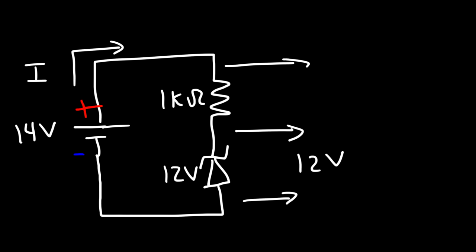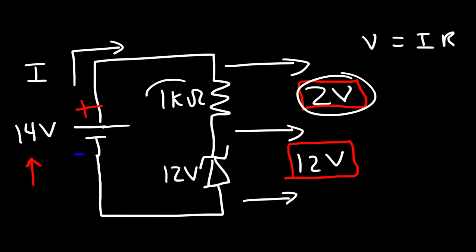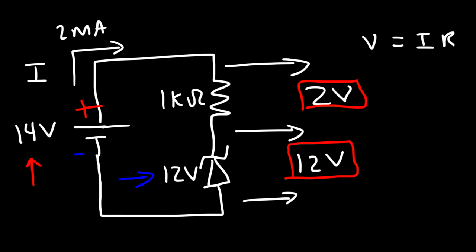That means the voltage across the resistor has to be 2 volts, because these two have to add up to the voltage of the battery. So we have 2 volts across a 1 kilohm resistor. Using V = IR, the current flowing through that resistor is going to be 2 volts divided by 1000 ohms, which is 0.002 amps or 2 milliamps. The Zener diode will maintain a relatively constant voltage of 12 volts when in reverse bias mode if the input voltage exceeds that value.